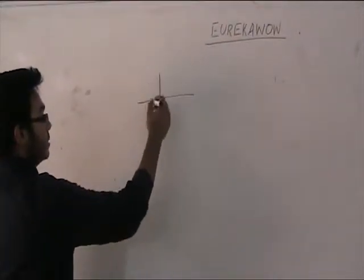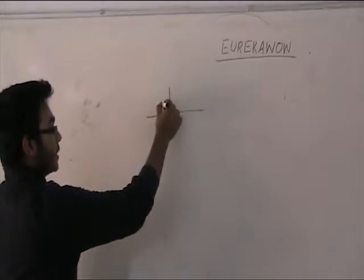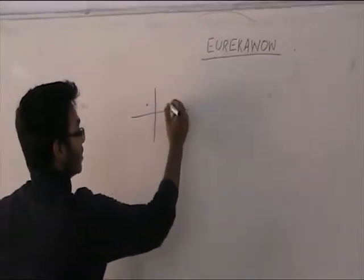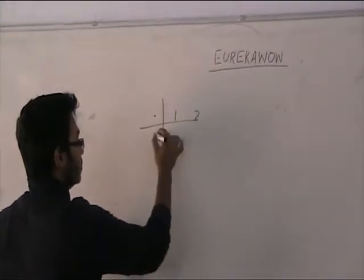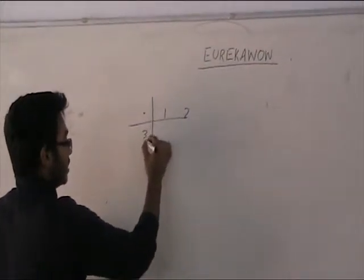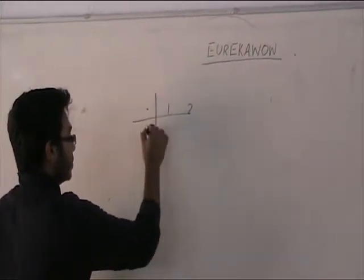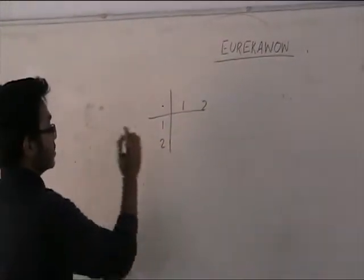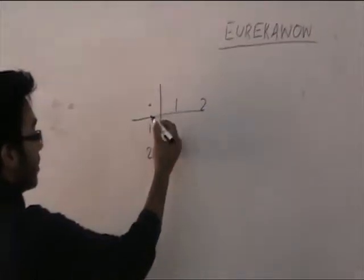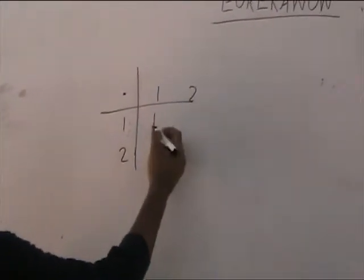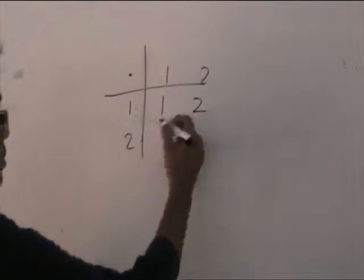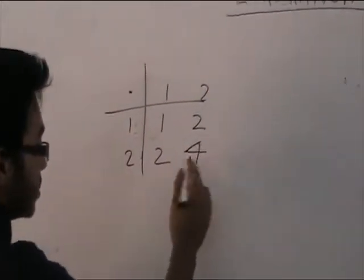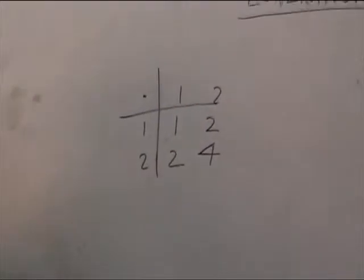This is basically a Cayley's table. Over here you have the binary operation and over here you have the elements of a set. If I have set 1, 2, and 3, the binary operation is multiplication. So 1 into 1 is 1, 1 into 2 is 2, 2 into 1 is 2, and 2 into 2 is 4. So this is the basic idea of Cayley's table.